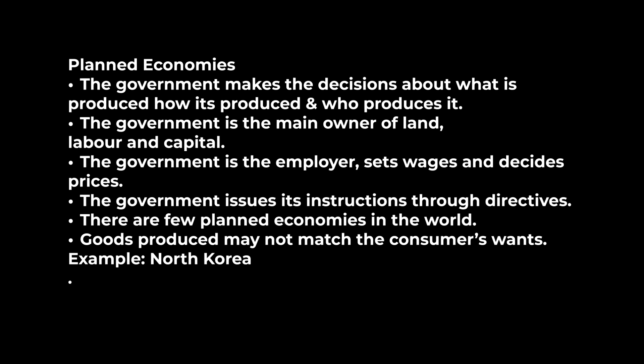Firstly, let's look at planned economies. The government makes the decisions about what is produced, how it is produced, and who produces it. The government is the main owner of land, labour, and capital — those all-important factors of production. The government is the employer, sets wages, and decides prices. The government issues its instructions through directives. There are few planned economies in the world, and goods produced may not match customers' wants. A good example would be somewhere like North Korea.